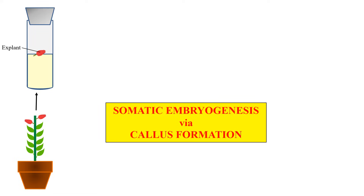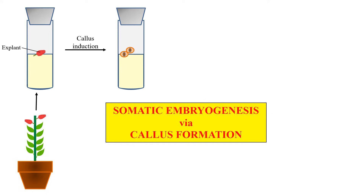Now let us discuss the procedure of somatic embryogenesis. First we take the parent plant and take the somatic part, because we are doing somatic embryogenesis. This somatic part, represented by the red color in the diagram, is also known as the explant. In the next step, it is allowed to change into callus via callus induction. Callus is a mass of unorganized and undifferentiated cells.